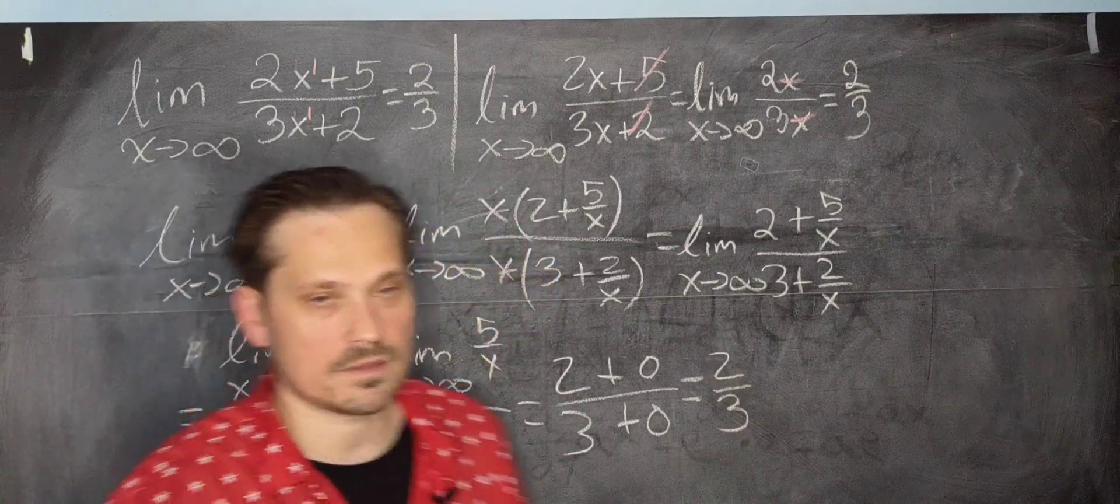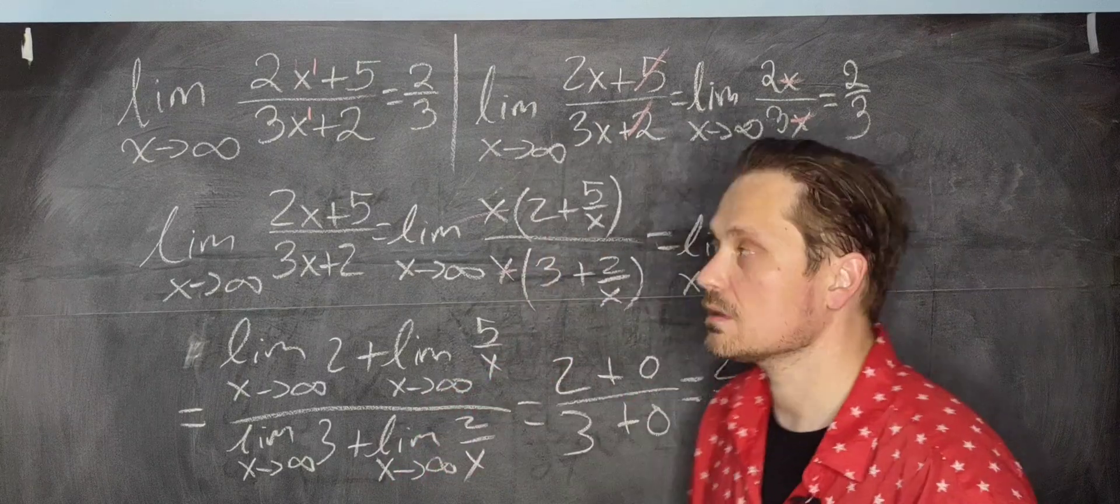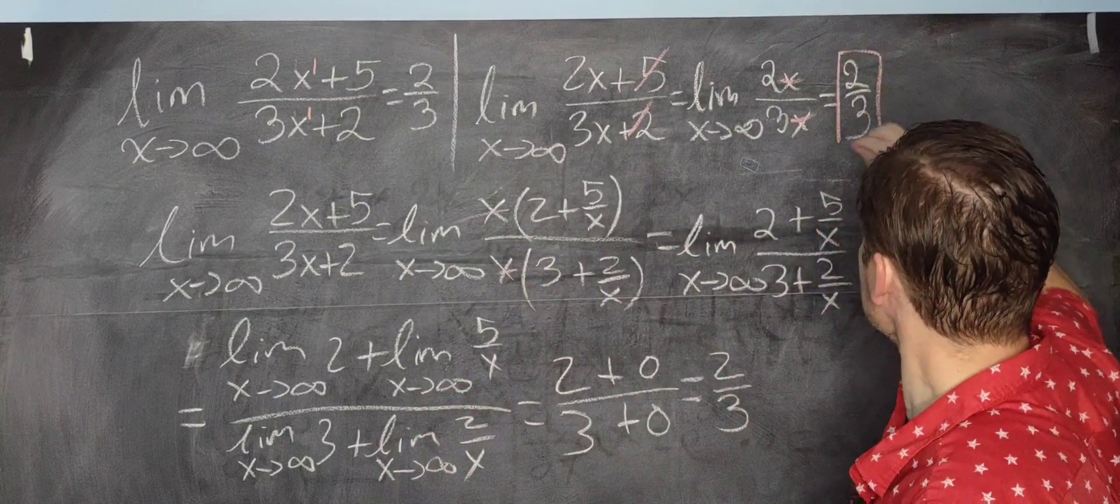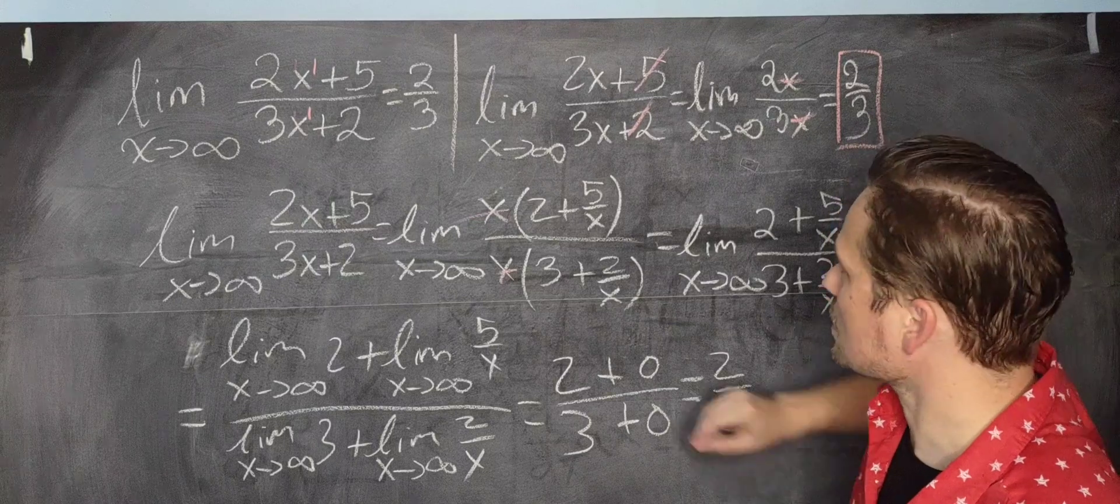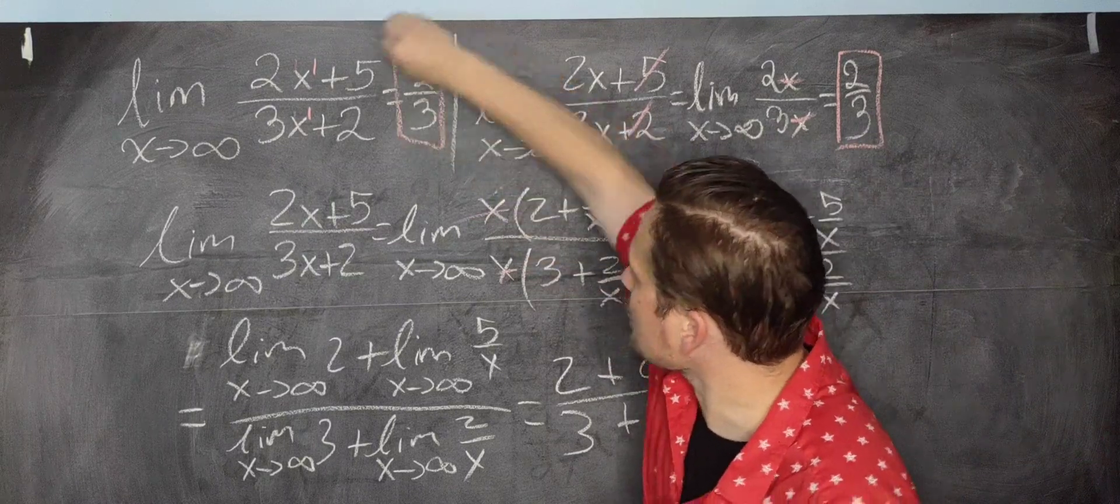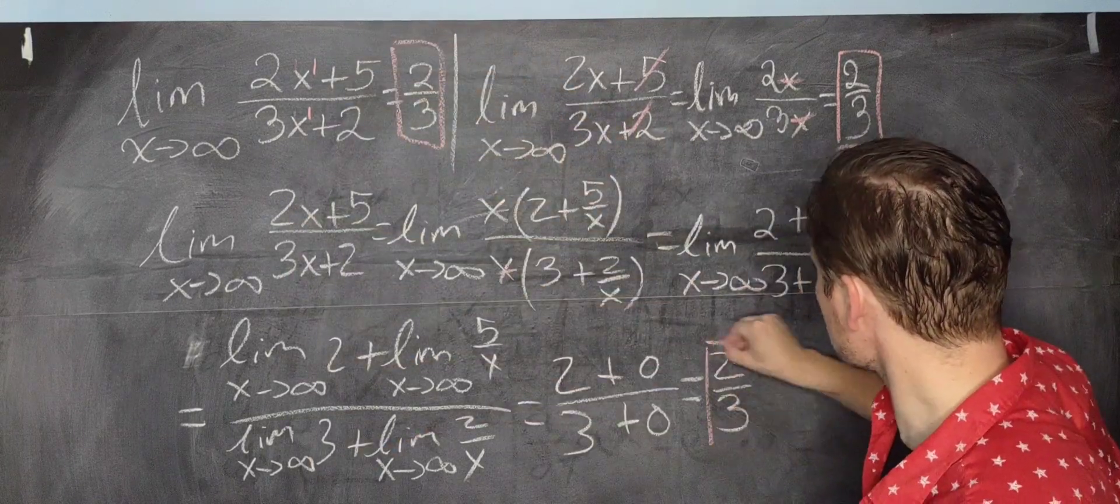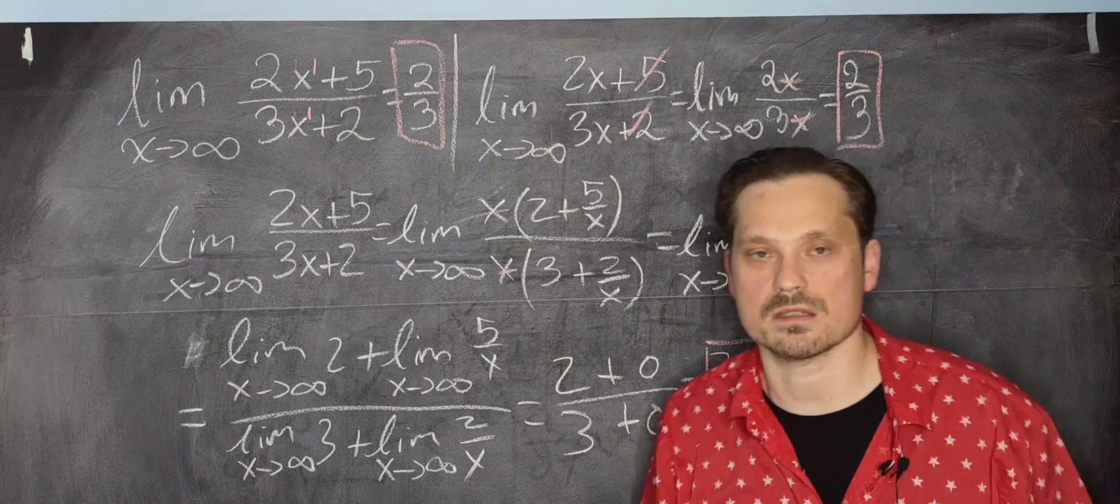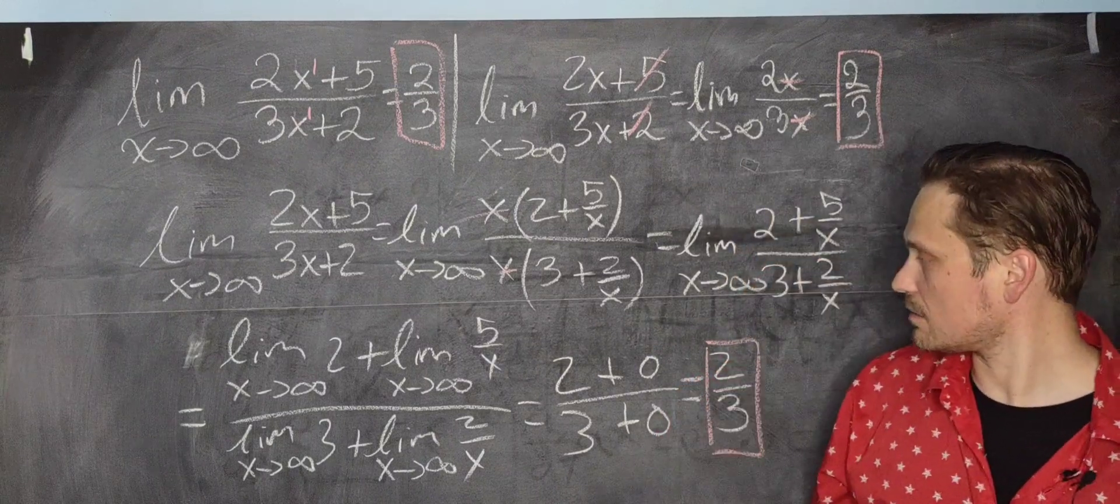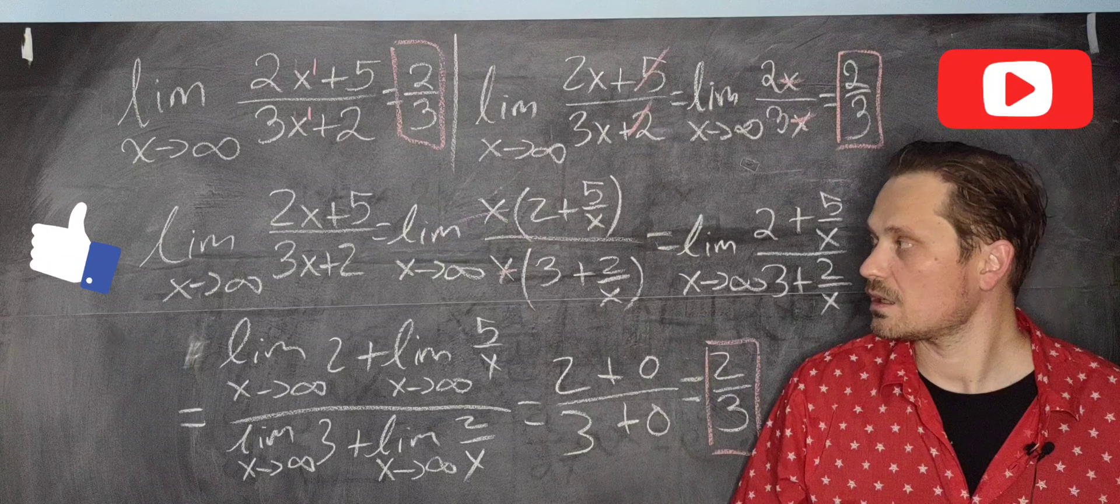So regardless of the level of detail you're expected to show, depending on who's teaching what you're expected to do, it's 2 thirds. And it's 2 thirds by memorization or it's 2 thirds by more formal limit manipulations. You get the same value in each case. And that is it.